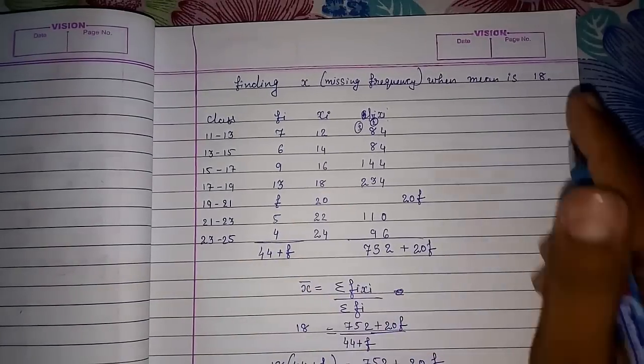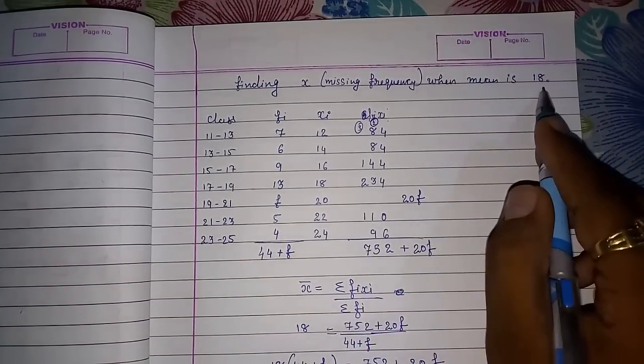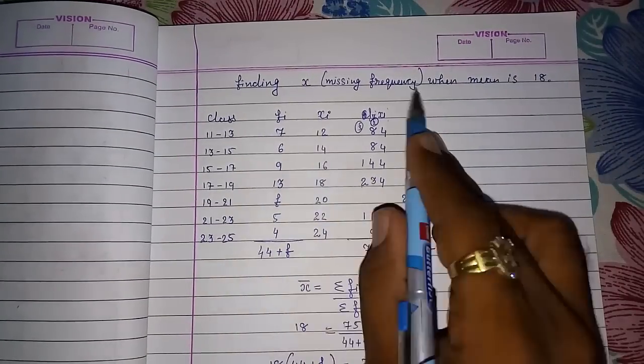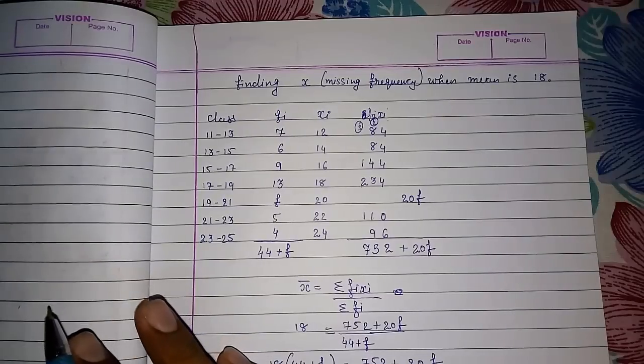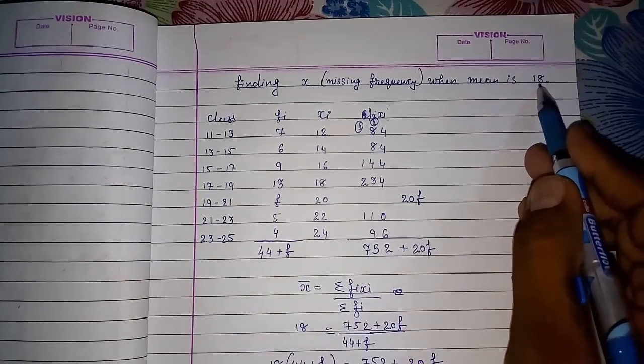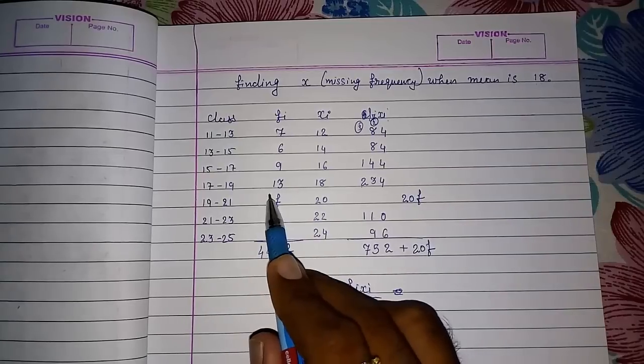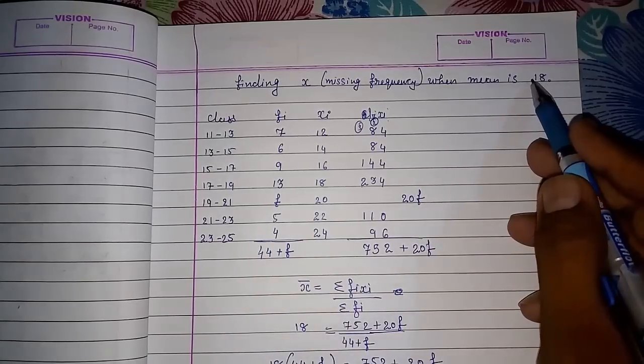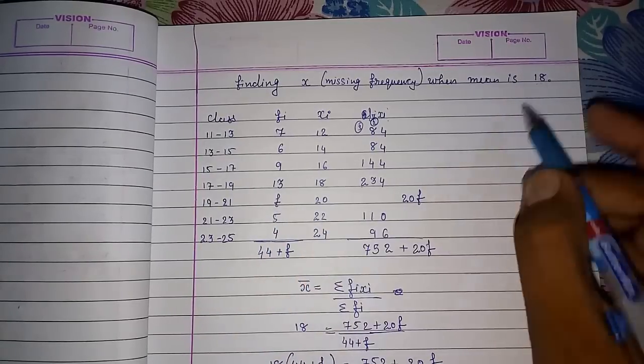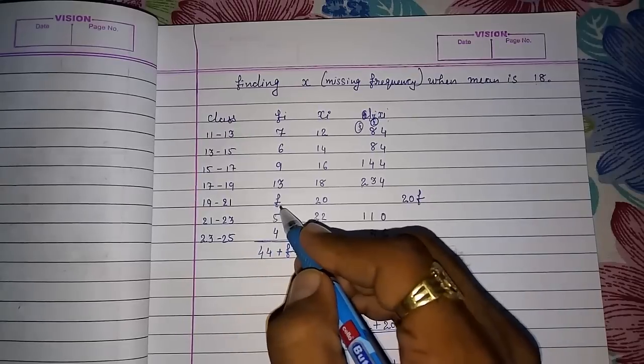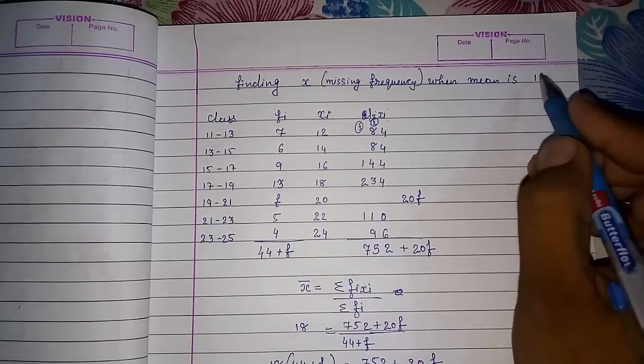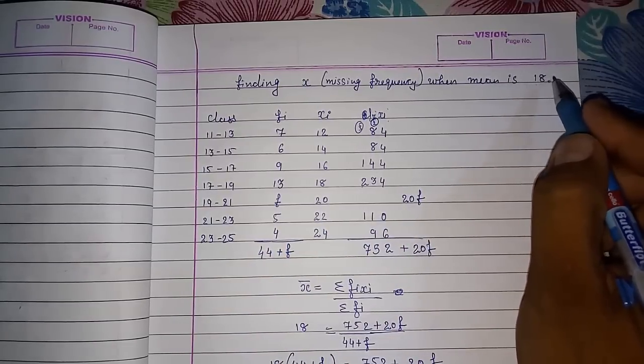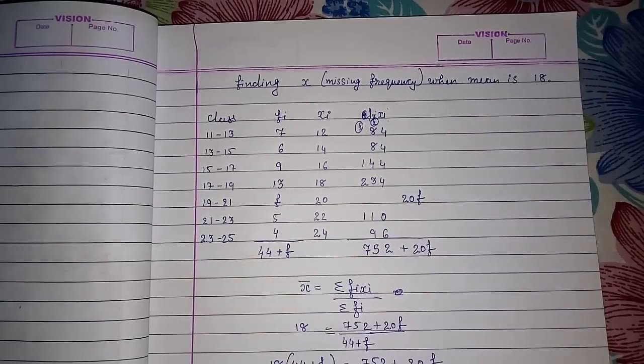And directly we have to solve as we were solving in simple method. But here they will give you mean, median, or mode, and they will give you this unknown. They cannot give this also. They cannot directly give us that find missing frequency without mean, median, or mode. Either they will give you mean, median, or mode, and that time only we can find this. So this way we can find the missing frequency.